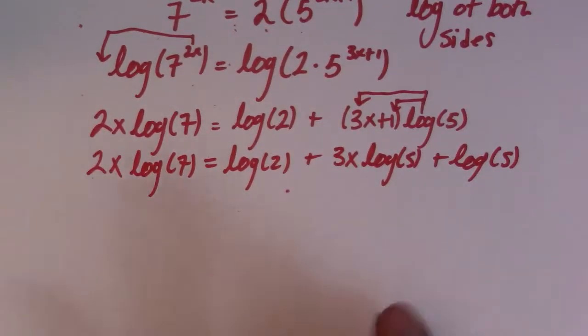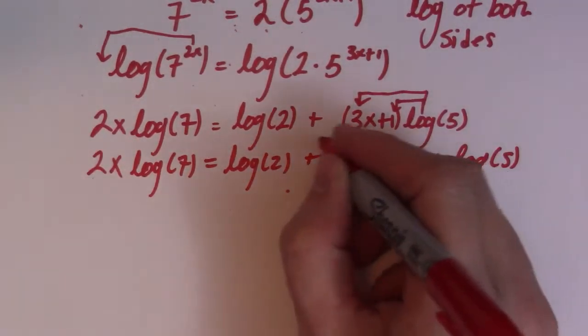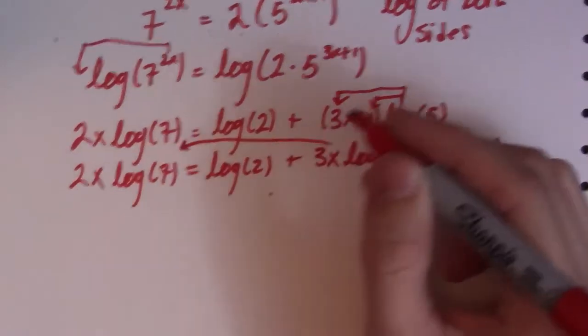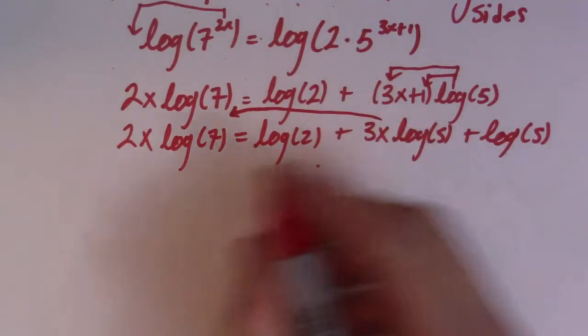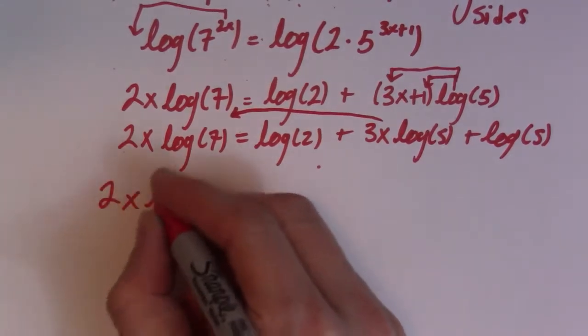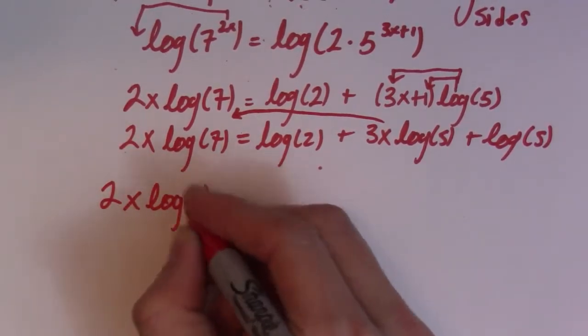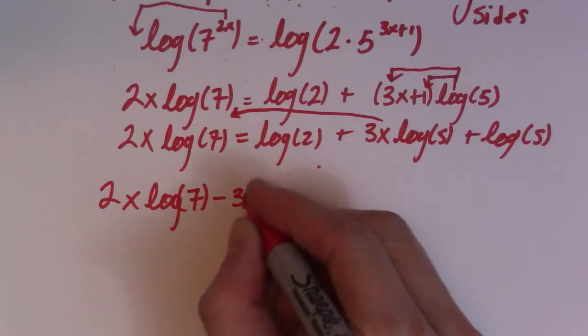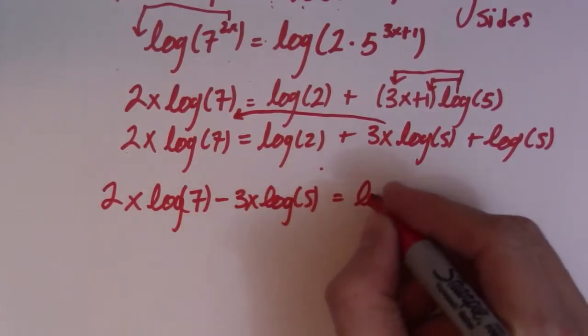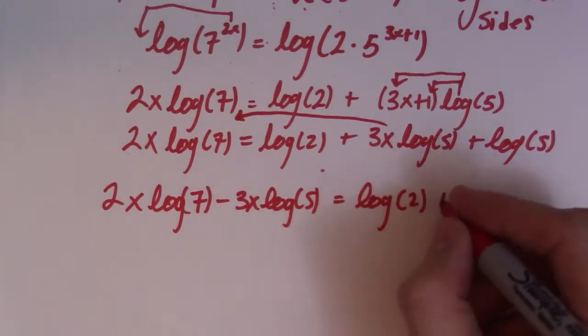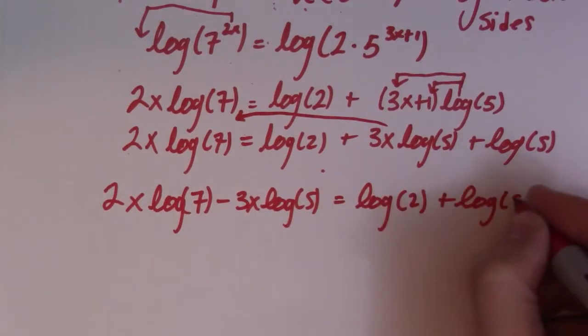So now my next step is anything that has an x in it should go to the left side. Anything that doesn't stays on the right side. So the only thing I have to move is this. So I get 2x log of 7 minus 3x log of 5. And that's equal to log 2 plus log of 5, just like that.